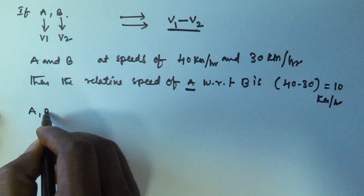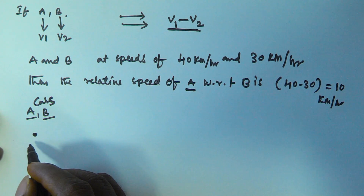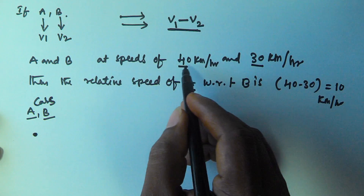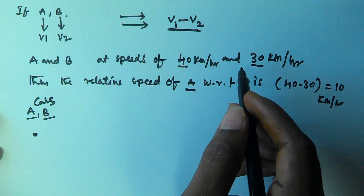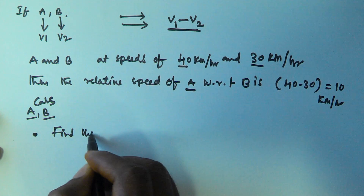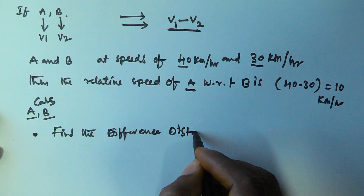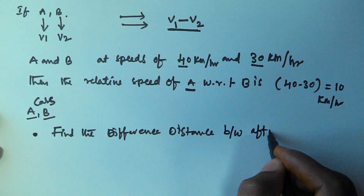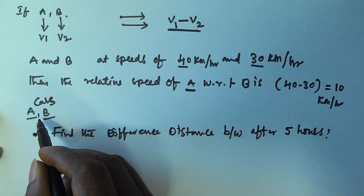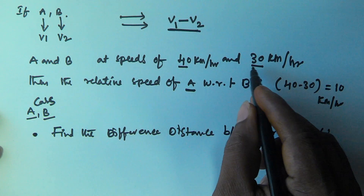Two cars A and B start from the same point at speeds of 40 kilometers per hour and 30 kilometers per hour, moving in the same direction. Find the distance between them after five hours. Car A is moving at 40 km/h and car B is moving at 30 km/h, both starting from the same point in the same direction.